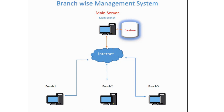In this video I'm going to show you how we can use a branch-wise management system. It helps us keep data centralized and split the database into different local branches. If you are planning to access each branch from a remote place, you should have an active internet connection. For example, if branch one is in a remote location and you enter any transaction, it will transfer the data to the main server back and forth. If any local branch loses the internet connection, they cannot do any transaction unless the connection is restored.